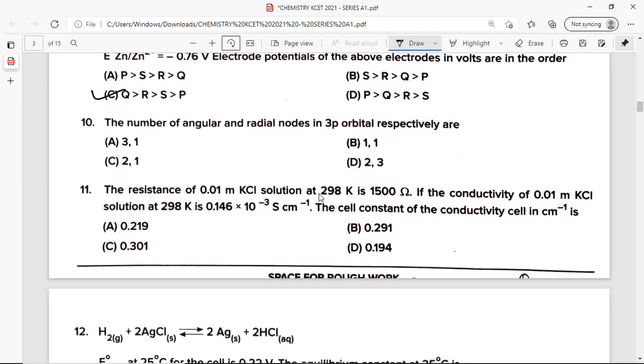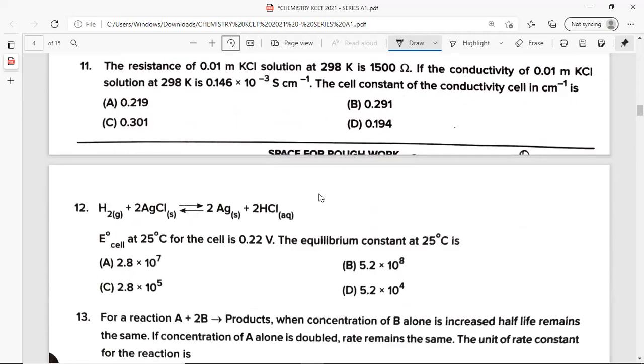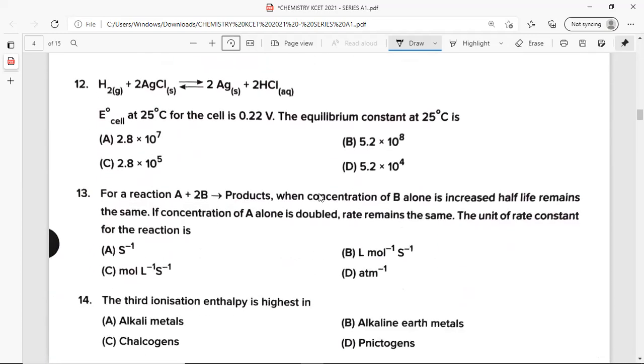Question number 10: The number of angular and radial nodes in 3P orbital respectively are option B, that is 1, 1. Question number 11: The resistance of 0.01 molar KCl solution at 298 Kelvin is 1500 ohm. If the conductivity of 0.01 molar KCl solution at 298 K is 0.146 into 10 power minus 3 Siemens per centimeter, the cell constant of the conductivity cell in per centimeter is option A, 0.219. Question 12: H2 plus 2 AgCl gives rise to 2 Ag plus 2 HCl. E naught is 0.22 volt. The equilibrium constant at 25 degrees Celsius is option A, 2.8 into 10 power 7.